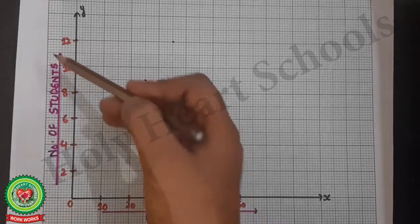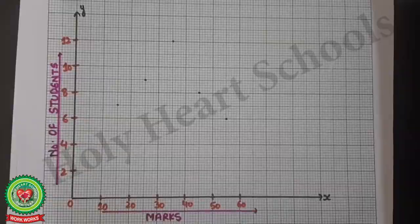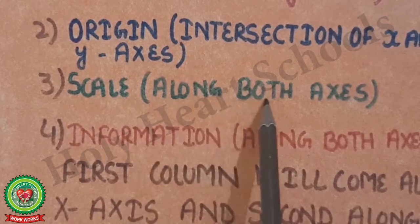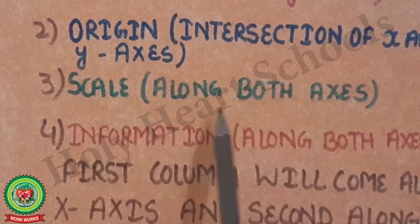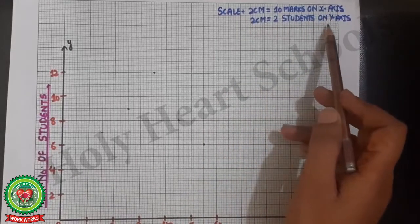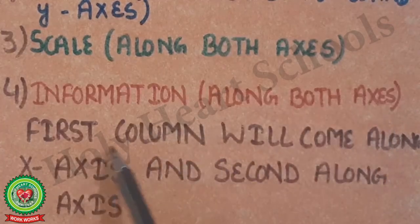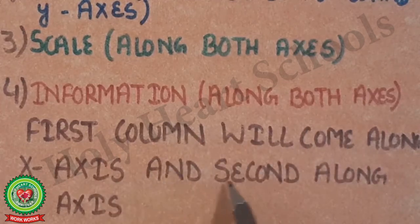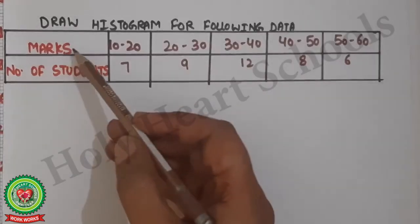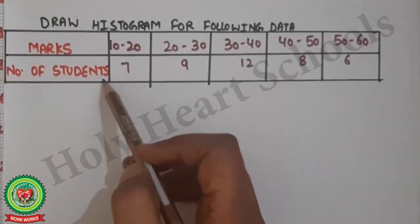The origin is the intersection of the x-axis and y-axis — this point is known as the origin. We must also keep in mind the scale, which is the gap along both axes. The first column of information will come along the x-axis and the second column will come along the y-axis.